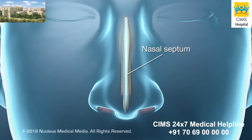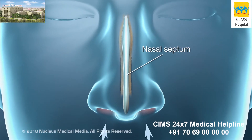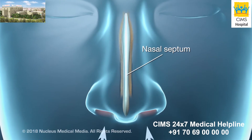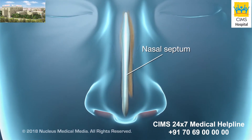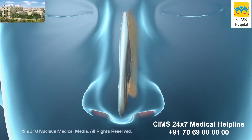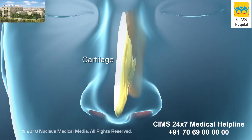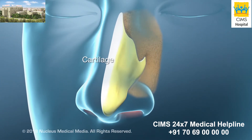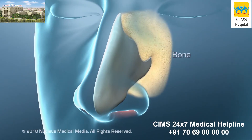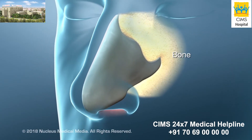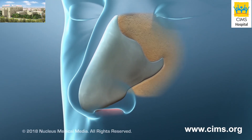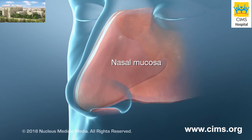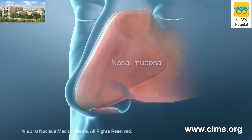Your nasal septum is a thin wall that divides the inside of your nose into right and left sides. It's made of soft, flexible cartilage in the front and bone in the back. A thin layer of tissue called the nasal mucosa covers the septum.